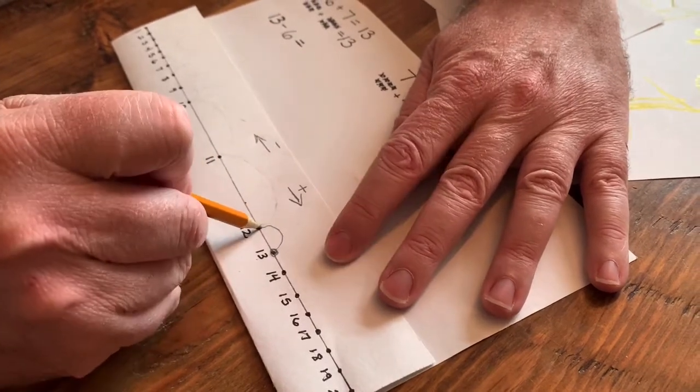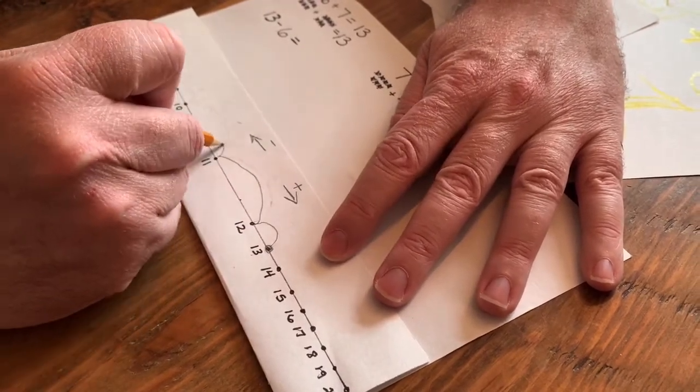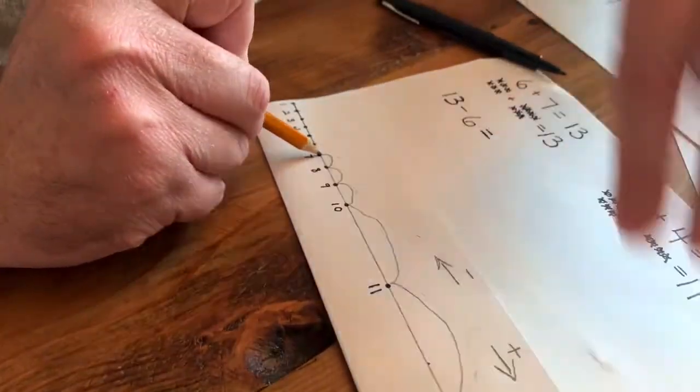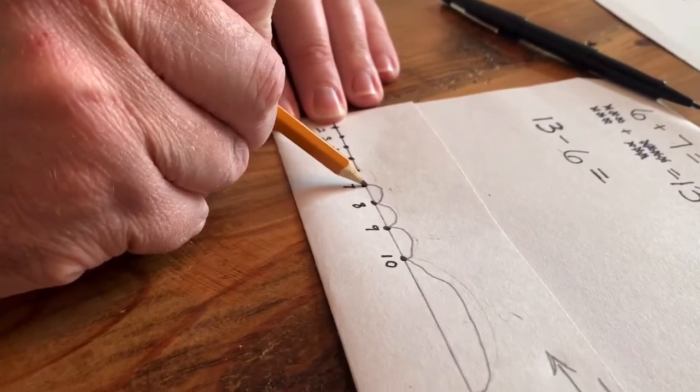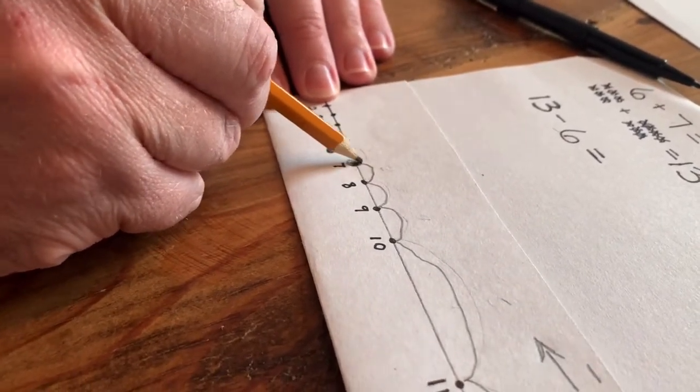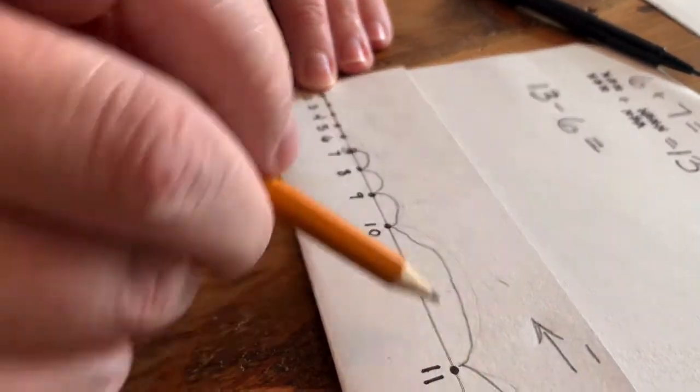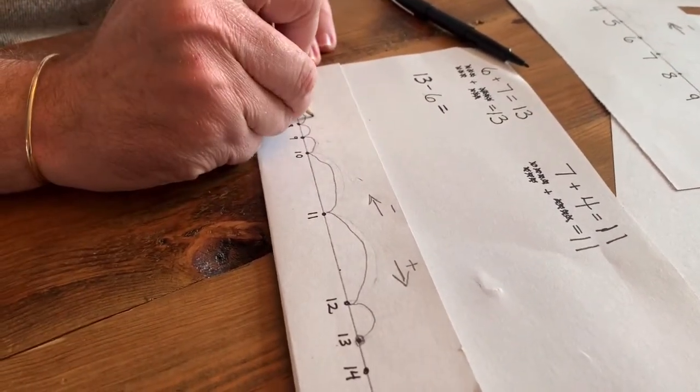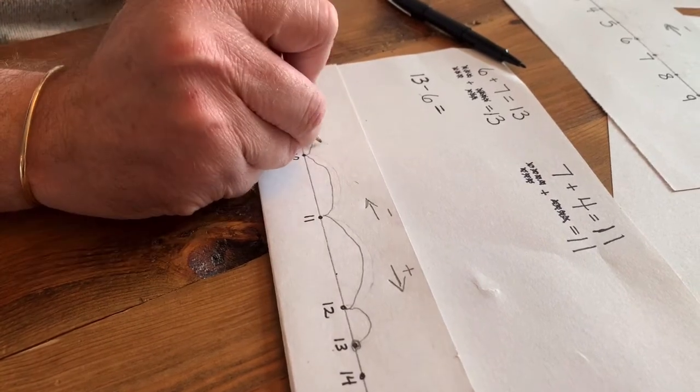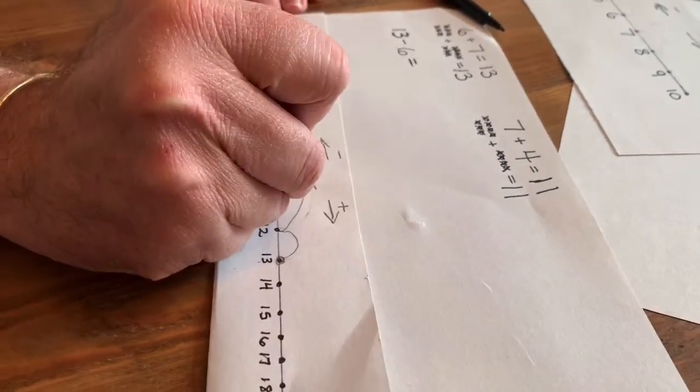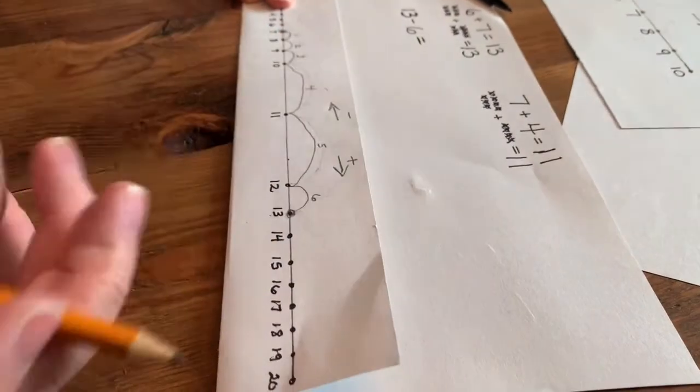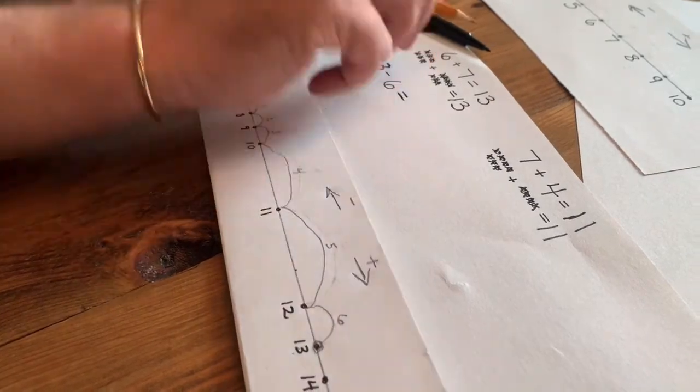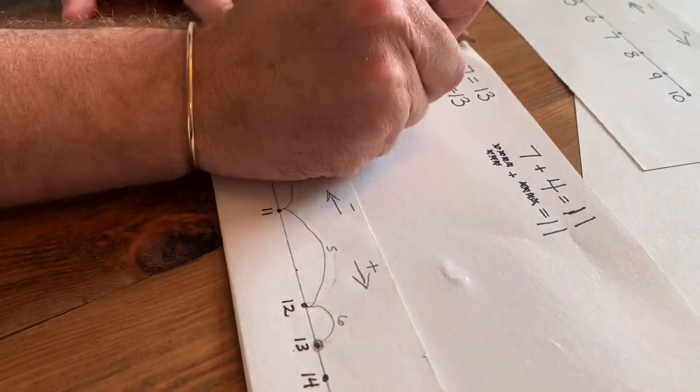And I'm going to do 6 leaps this way. And we're going to have some big leaps, but that's okay. So here we go. We're going to start 1, 2, 3, 4, 5, 6. And I stop. And I'm going to leave my pencil there and I'm going to circle it so I don't lose my spot. And I'm going to count my leaps just to be sure. I need to make sure I did 6 leaps. 1, 2, 3, 4, 5, 6. I am correct. I started at 13. I did 6 leaps. And the answer is 7.